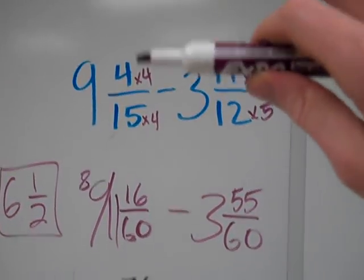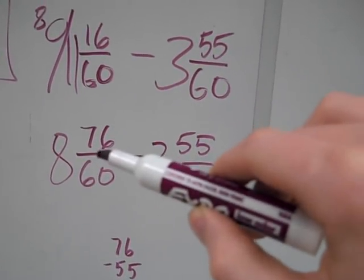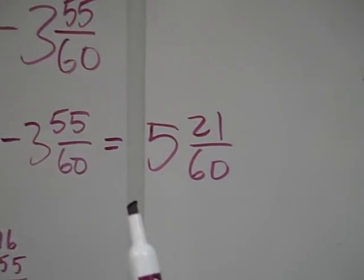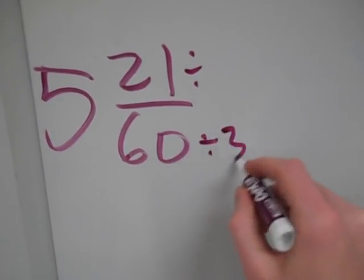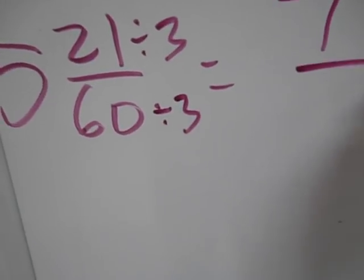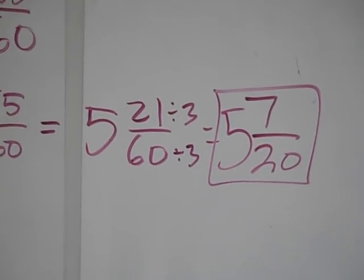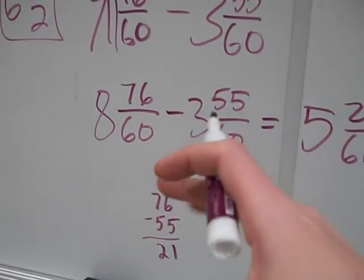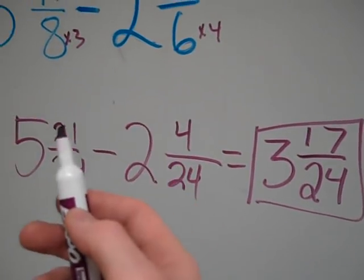So let me regroup here: made common denominators, saw that I had to borrow, borrowed from the 9, gave 1 to the 16 sixtieths, turned that into an improper fraction, subtracted the whole numbers and the fractions. The last thing is to make sure this is in simplest form — and it's not. I can divide both by 3: 3 goes into 21 seven times and 3 goes into 60 twenty times. So I get 5 and 7 twentieths. This is a great example to show how much work is involved when you have to borrow.